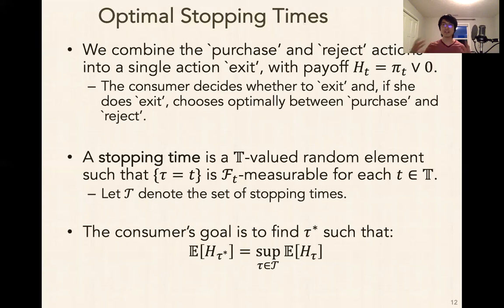So stopping time is just that element. And we're going to let script T denote the set of stopping times. The basic idea is that the consumer is trying to find a stopping time tau star such that the expected value of H of tau star, so H is her value process, H of tau star is the value process stopped according to the rule tau star. And that should equal the supremum across all stopping times of her expected payoffs, of the stopped process. We want to find a tau star that maximizes her payoff. What originally started as a consumer interacting with personalized pricing algorithms, through some of our modeling assumptions and then this reduction covered on this slide, we're able to phrase it as a problem of finding an optimal stopping time.